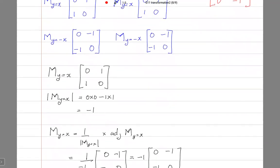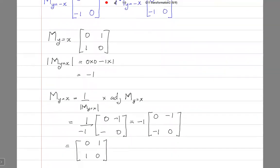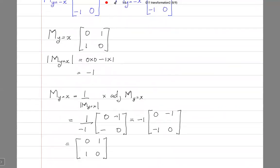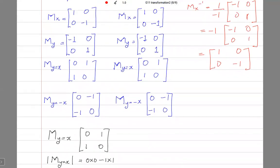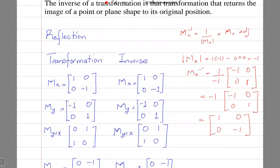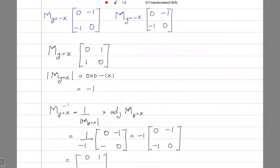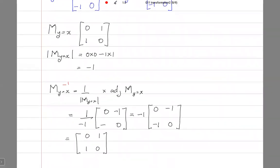What we did on the previous page was to show that the inverse of reflection in the x-axis is still reflection in the x-axis. We also showed that the inverse of reflection in the line y equals x is reflection in the line y equals x. So the inverse of all reflections is the same reflection.